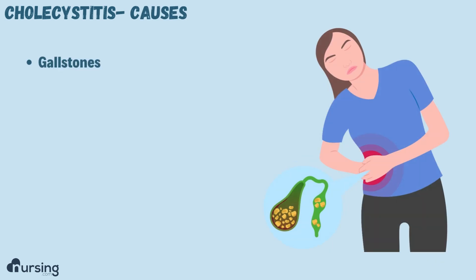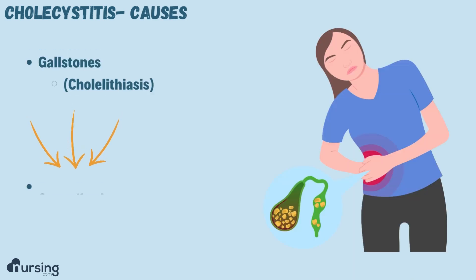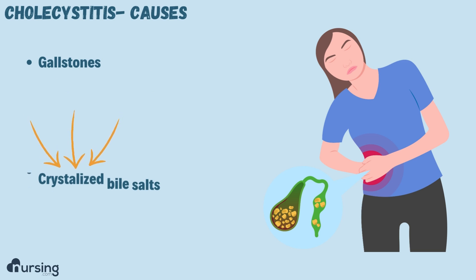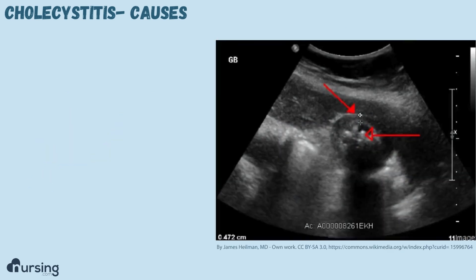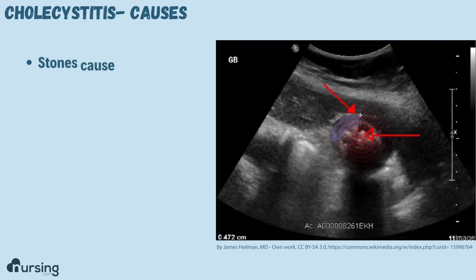The most common cause is gallstones, or cholelithiasis, which is crystallized bile salts. You can see here on this ultrasound that there's thickening around the outside of the gallbladder — that's the inflammation — and there are also stones on the inside. You can see these little stones in here.